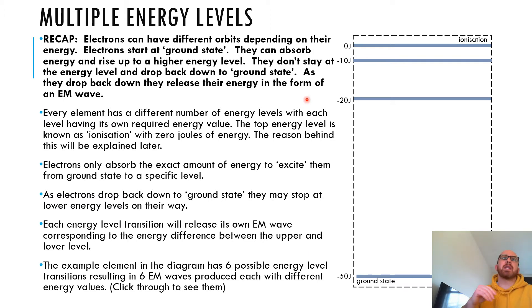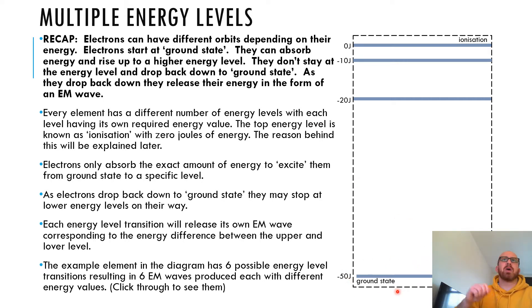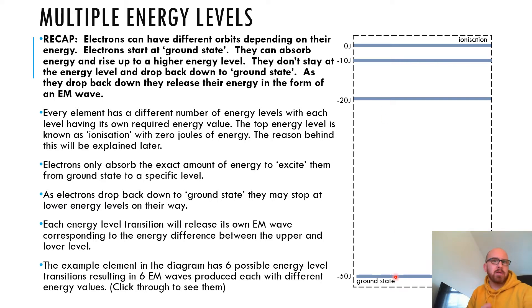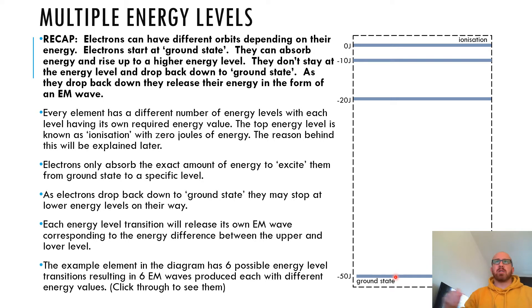Electrons can have different orbits depending on their energy. Electrons start at ground state and they absorb energy, rising up to a higher energy level. They absorb energy and go from the ground state to a higher energy level. They don't stay at that energy level and they drop back down to ground state, and as they do that they release EM waves. Every element has a different number of energy levels, with each level having its own required energy value.